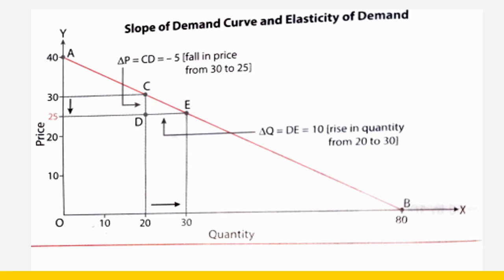Have a look at this graph. On the y-axis price is shown and on the x-axis quantity is shown. When price is falling from 30 to 25, there is a change in price by minus 5 — minus because there is a fall in price. When price decreases from 30 to 25, quantity demanded is increasing from 20 to 30, that is by positive 10, shown by DE. Change in price is shown by CD.